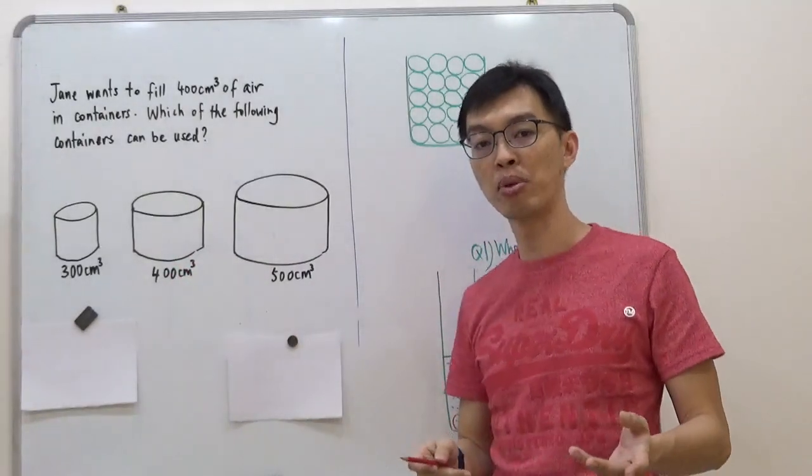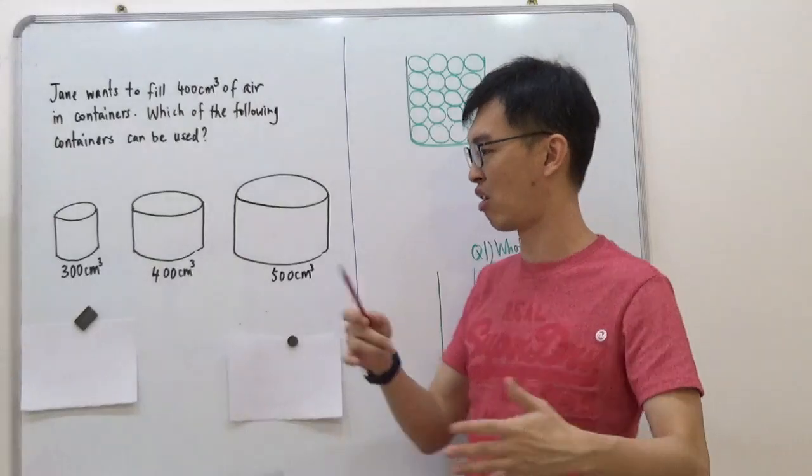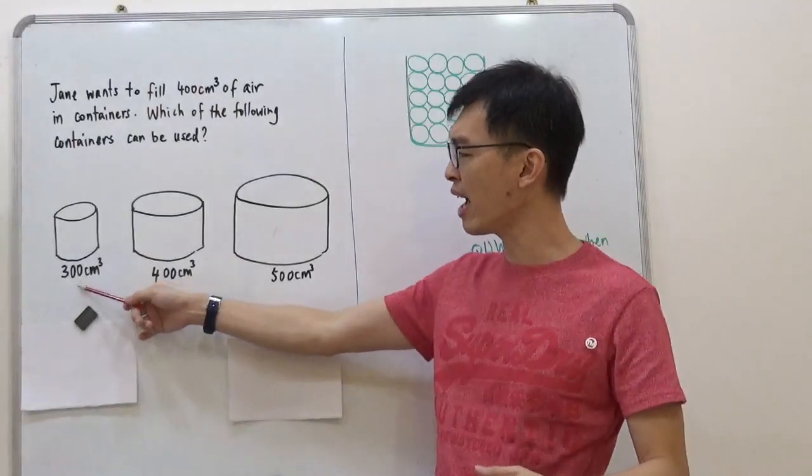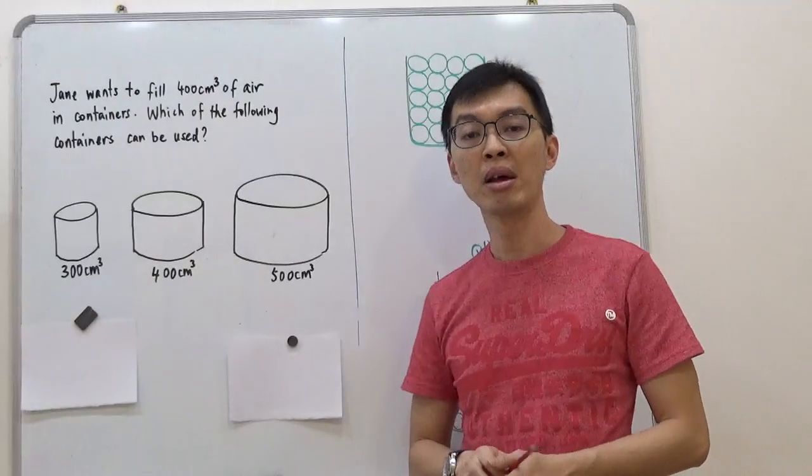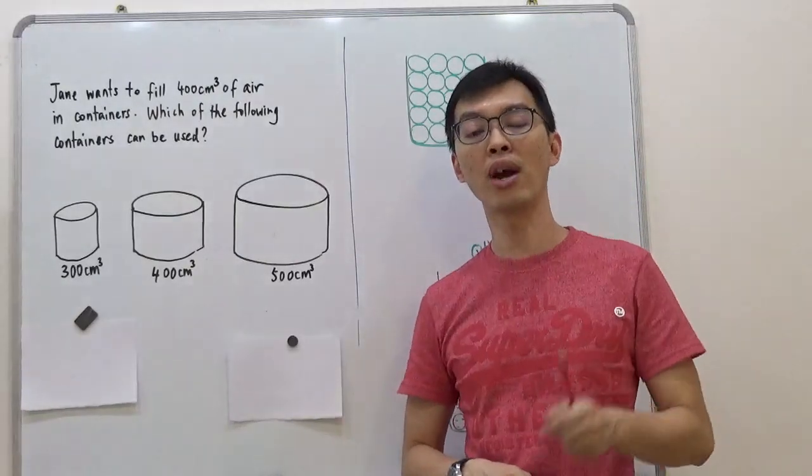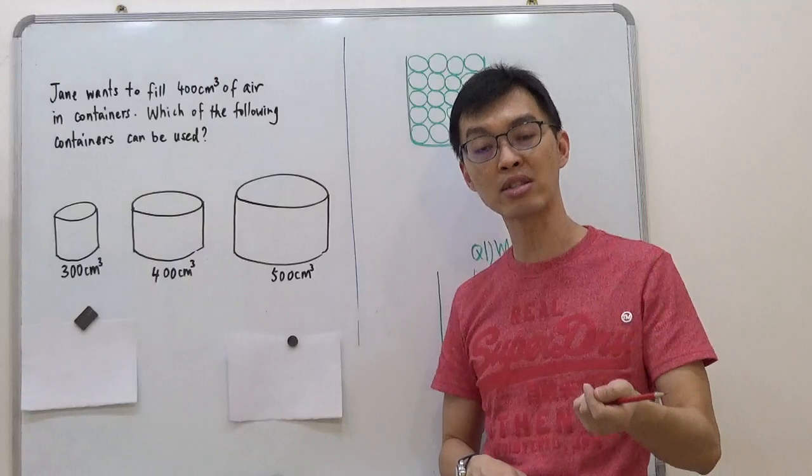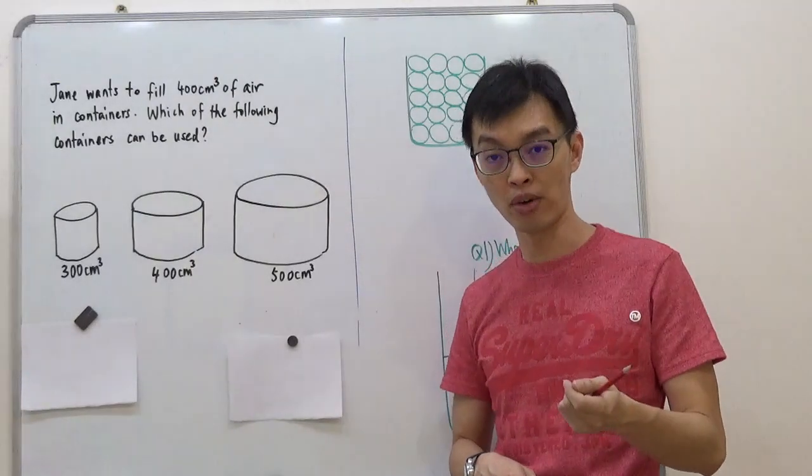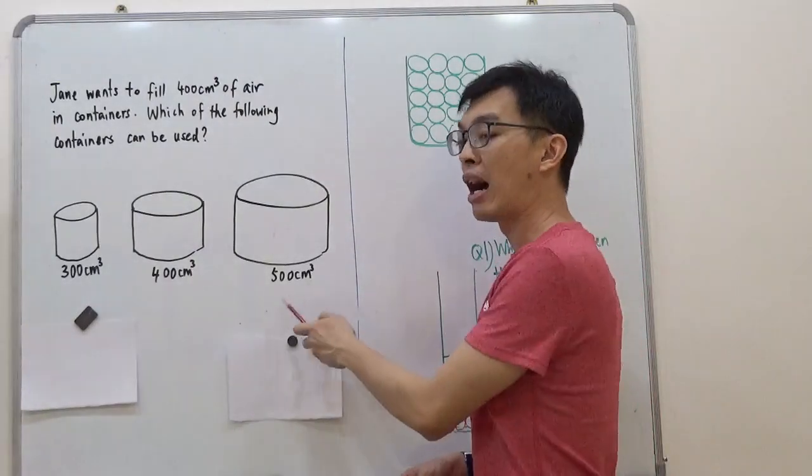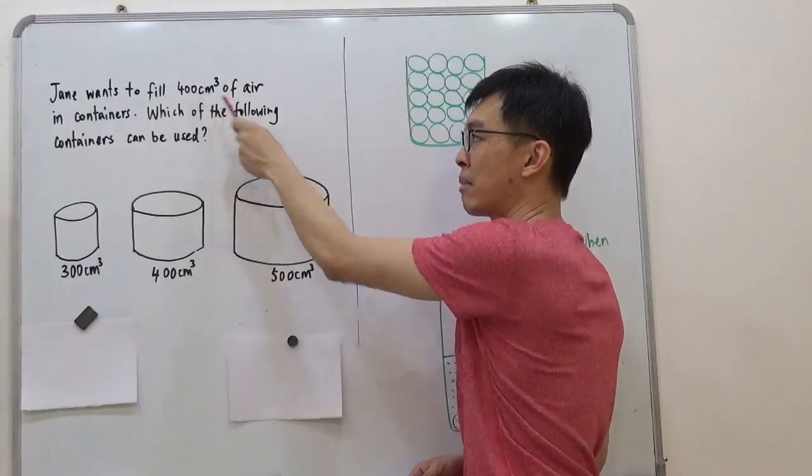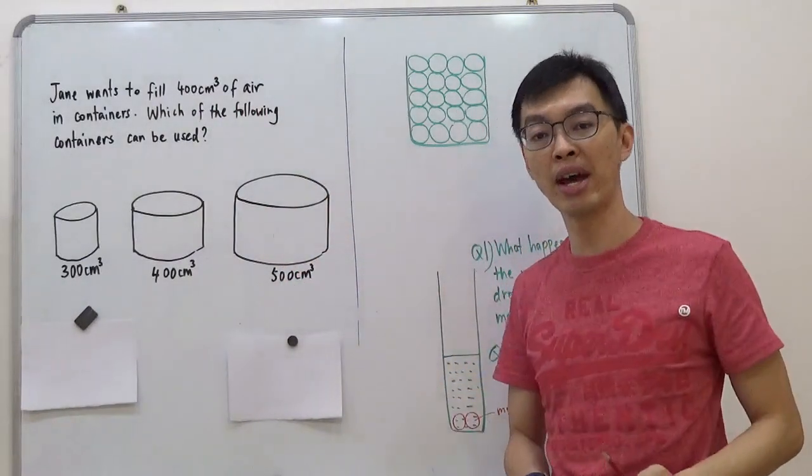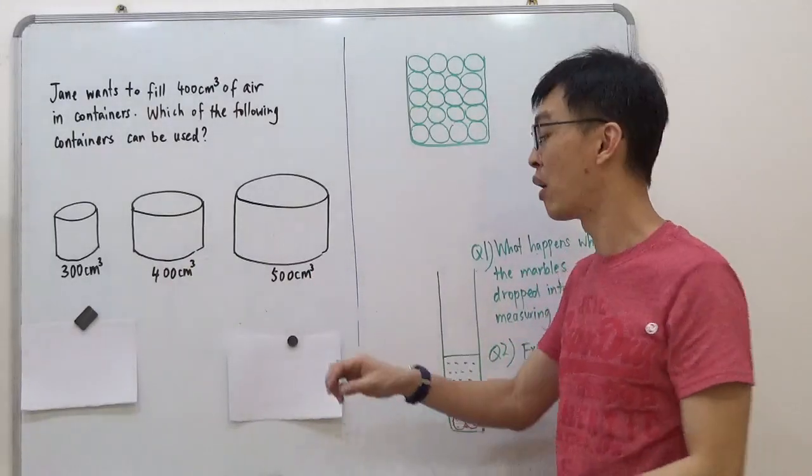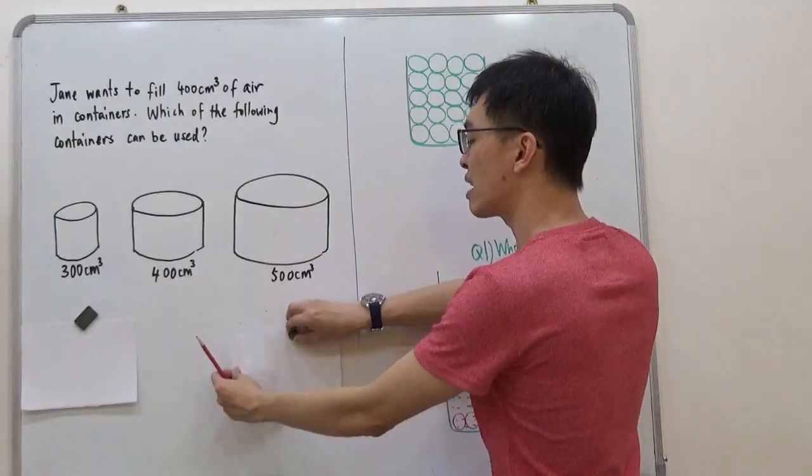Then I will have people starting to decide or to argue: No, yes, no, yes, no. They will start arguing. But you don't have to argue. Everything is based on science facts. We learned this before. Now, can we put 400 cm³ of air into this container that is 500 cm³? Let's take a look at this.